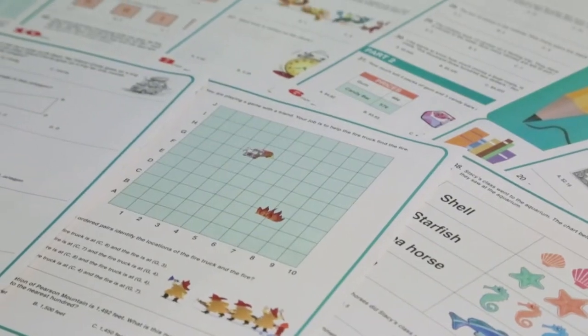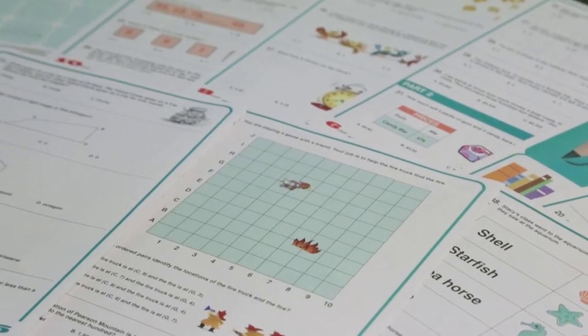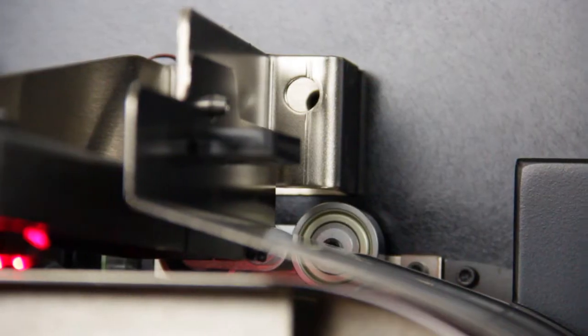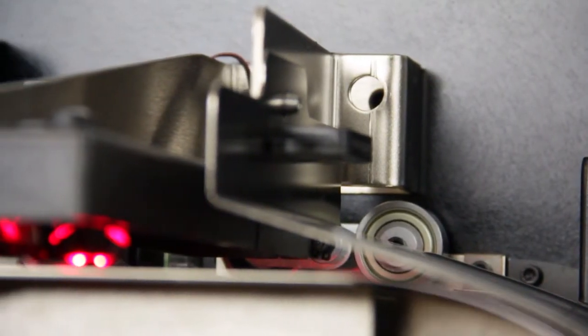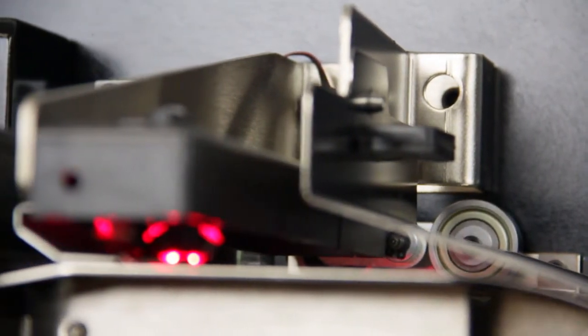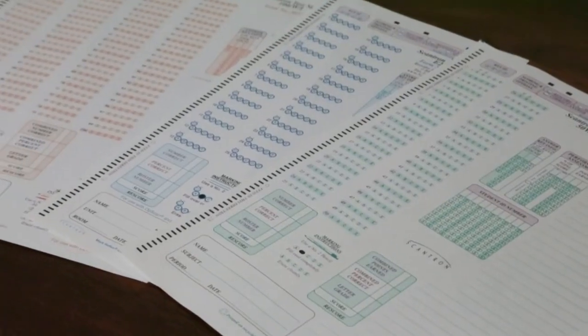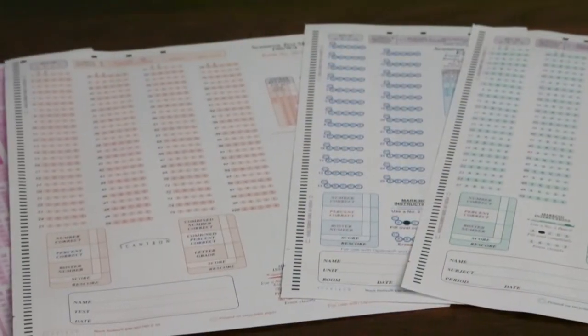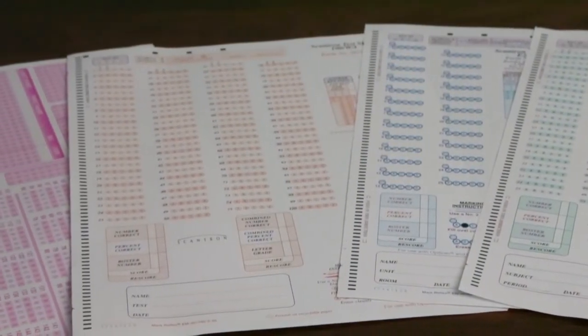If you're scanning forms marked with a pencil or pen, the OpScan 16 can be customized with either a pencil or ink-read head to suit your needs. If you have forms identified with barcodes, an optional barcode reader will capture this information along with your form data.